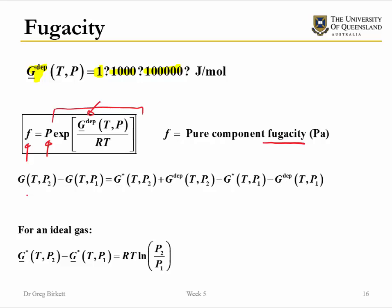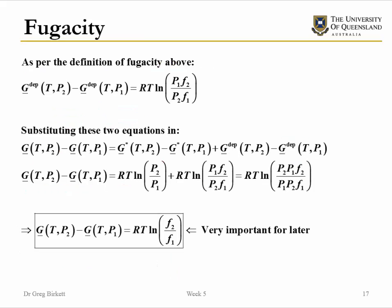The first thing we look at is how we break the Gibbs free energy down into the ideal gas parts and then the departure parts. From previous work, we know that the difference in Gibbs free energy between one pressure and another at the same temperature can be quantified as RT times the log of P2 over P1. If we look at the departure part and incorporate the definition of fugacity — which incorporates the departure Gibbs free energy — then the difference in departure Gibbs free energy between two pressures is the ratio of P1 over P2, but also the fugacity 2 over fugacity 1.